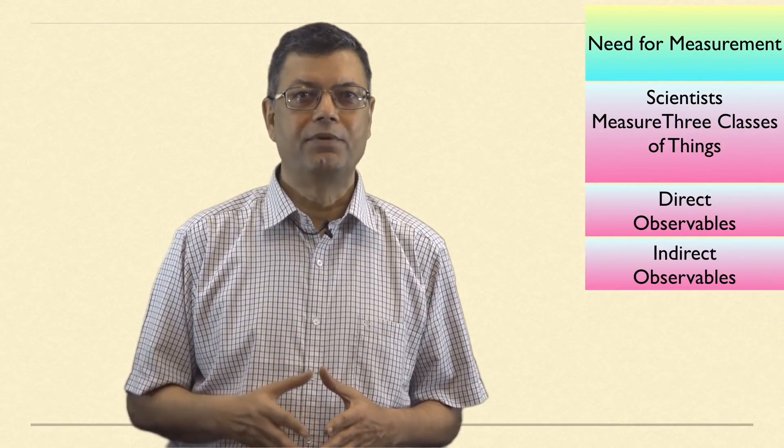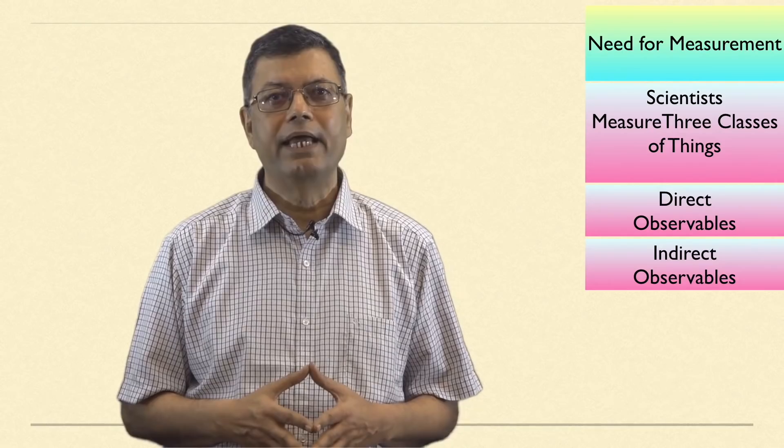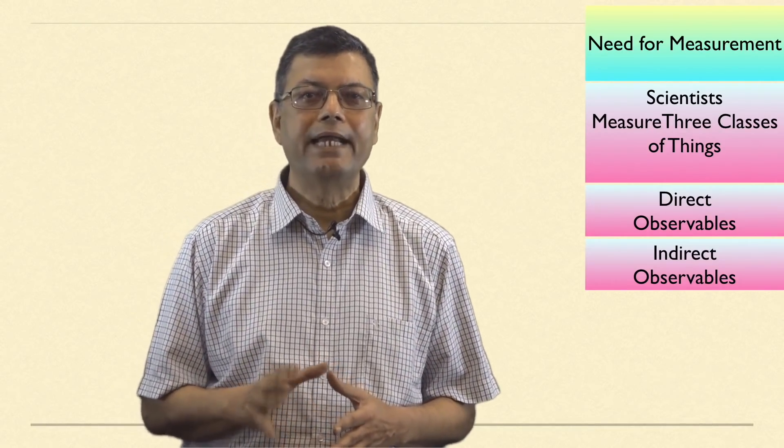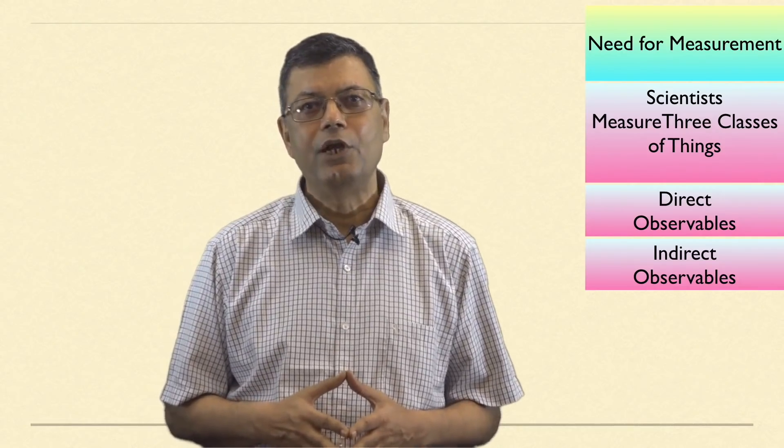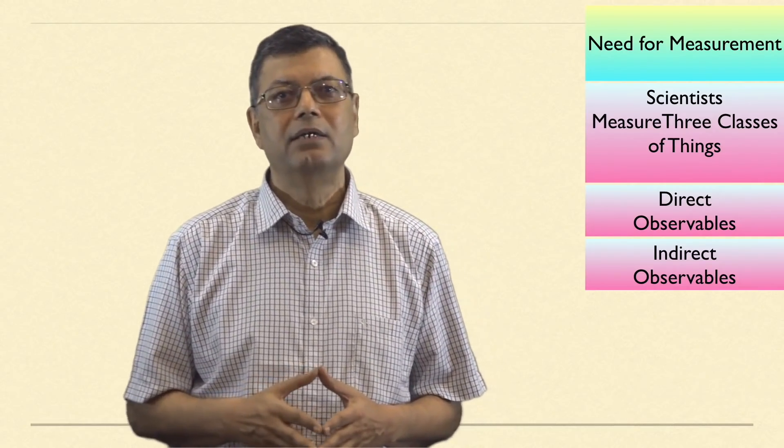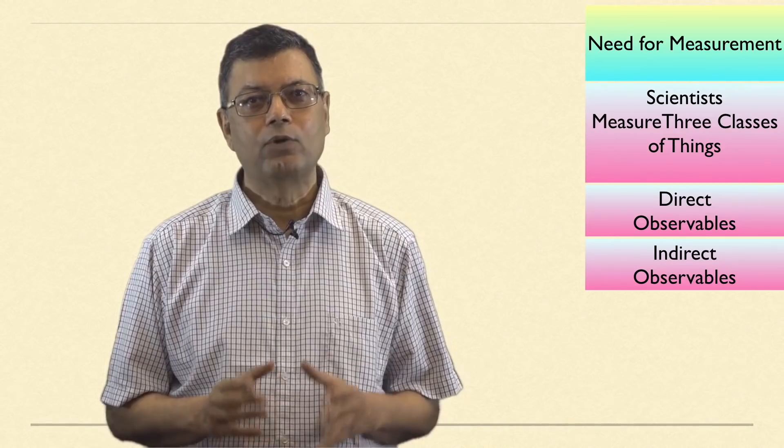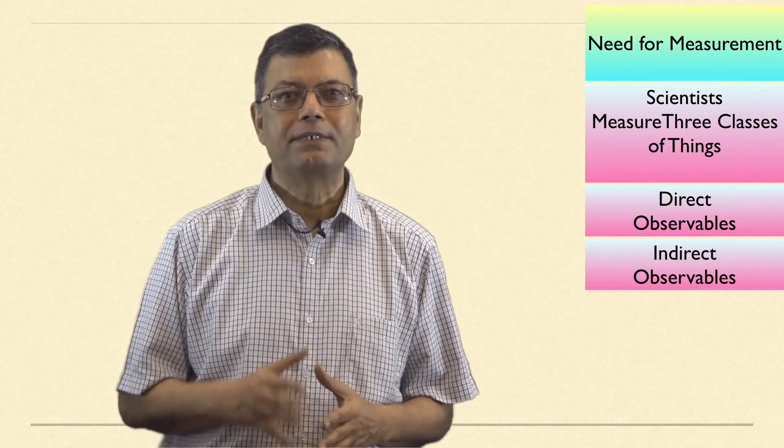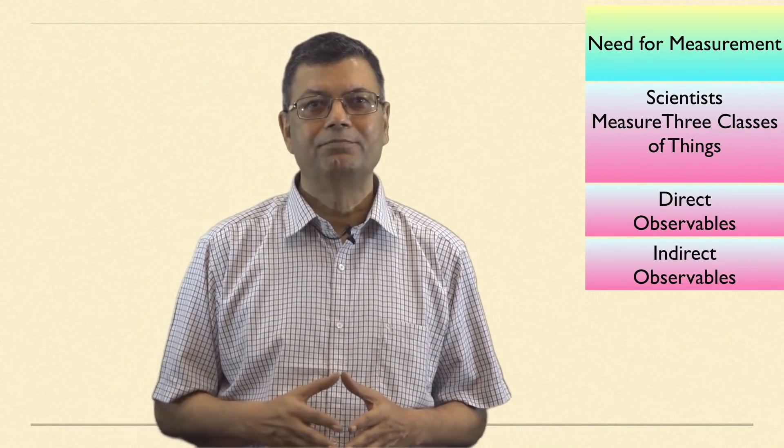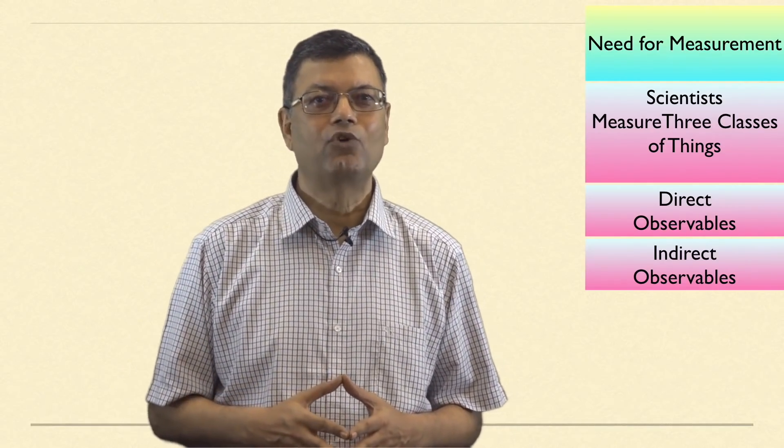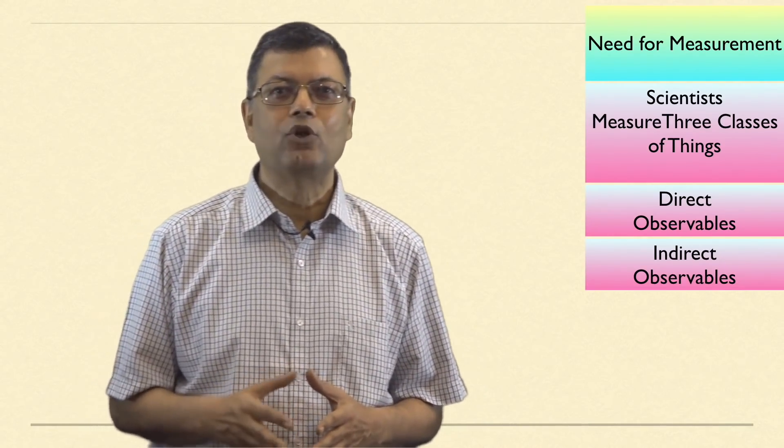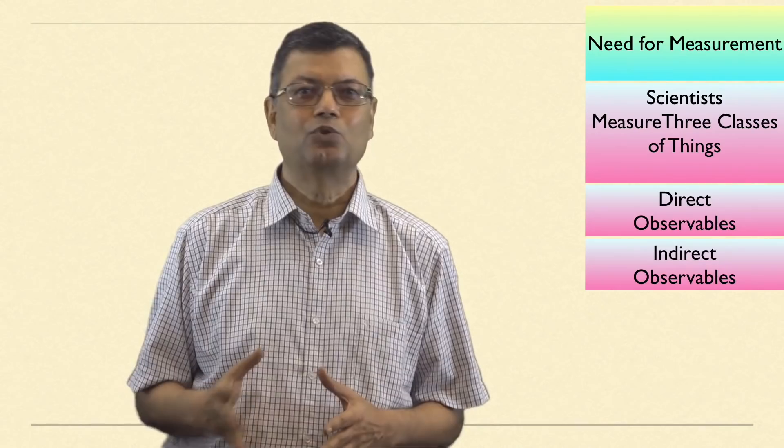The second class is called indirect observables. The indirect observables require relatively more subtle, complex, or indirect observations. We note a person's checkmark beside female in a questionnaire and have indirectly observed that person's sex. History books or minutes of corporate board meetings provide indirect observations of past social actions.